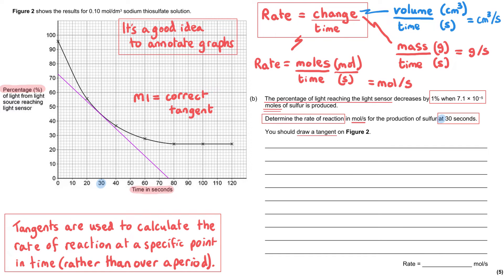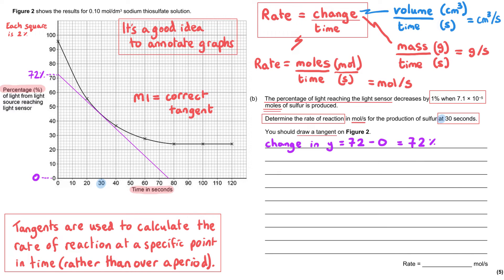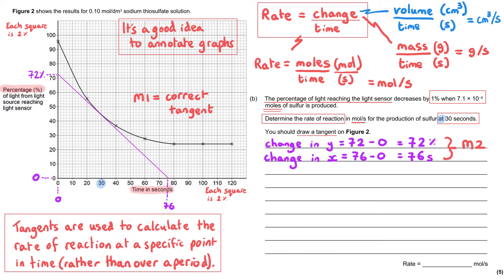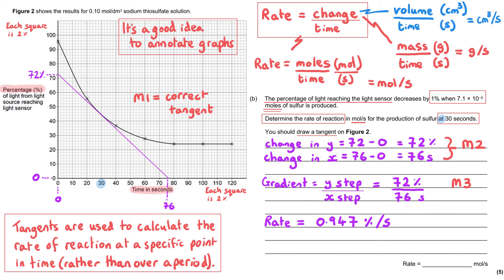Now we work out the gradient of the tangent. On the y-axis, the tangent starts one line above 70 — each square is worth 2%, so it starts at 72% — and goes down to 0%. So the change in y is 72%. On the x-axis it starts at 0 and goes to three small squares past 70; each small square is worth 2, so it reaches 76. The change in x is 76. The gradient is 72 ÷ 76 = 0.947 percent per second.